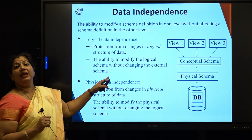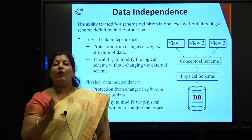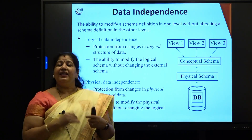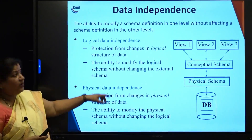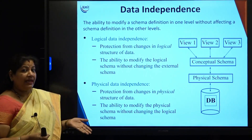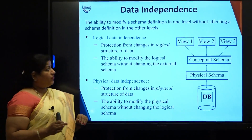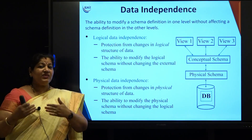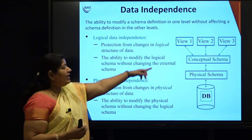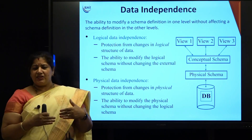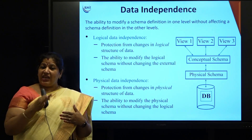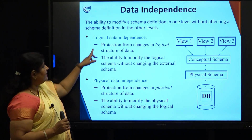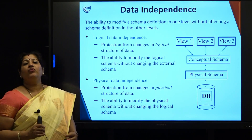Coming to data independence — what is the advantage of these levels of abstraction? It provides data independence. Each level is independent of the others; they are not interdependent. Though data is accessed, it is maintained at separate levels, because of which data independence is guaranteed. Data independence is defined as the ability to modify a schema definition in one level without affecting the schema definition in another level. Changes made to the physical structure will never impact the conceptual structure, and changes in the conceptual structure will not impact the user. We define data independence at two levels: logical data independence and physical data independence.